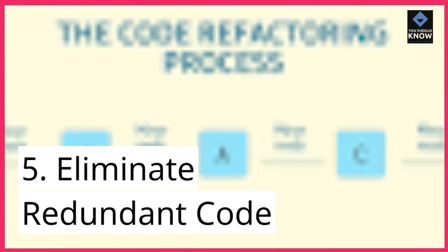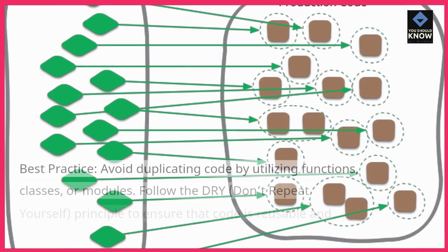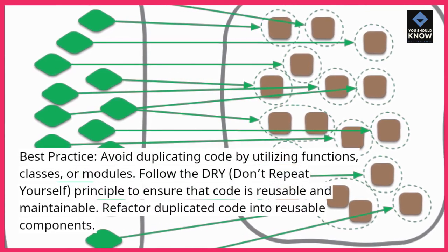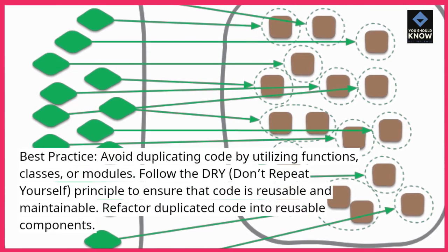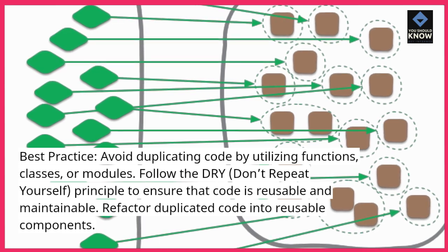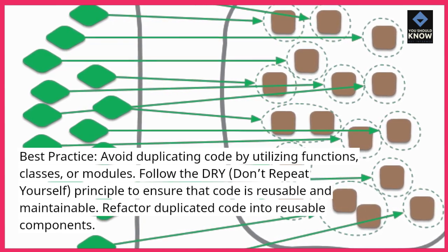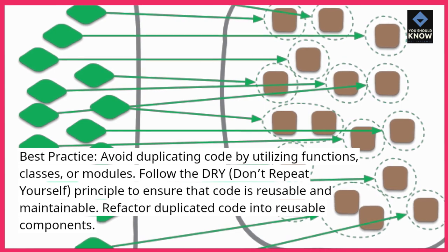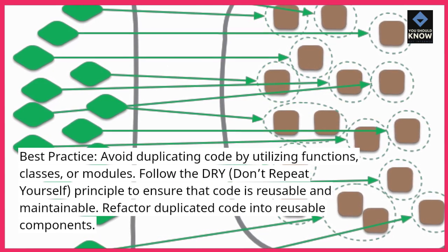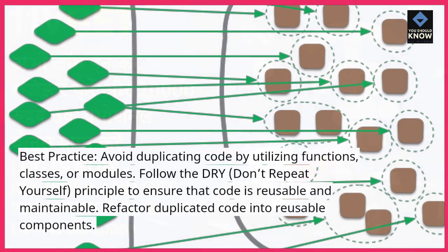5. Eliminate redundant code. Avoid duplicating code by utilizing functions, classes, or modules. Follow the DRY — Don't Repeat Yourself — principle to ensure that code is reusable and maintainable. Refactor duplicated code into reusable components.